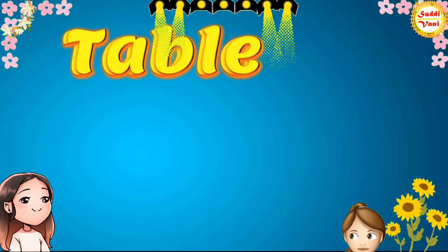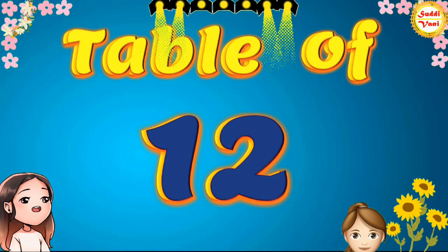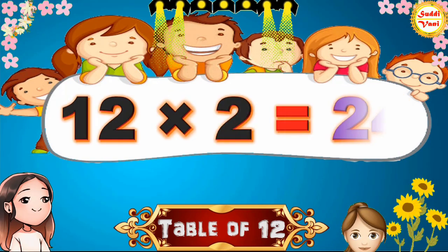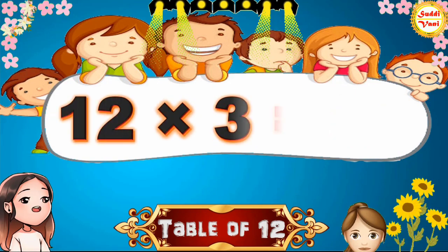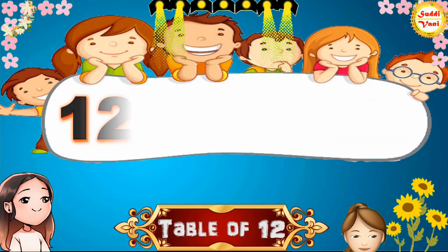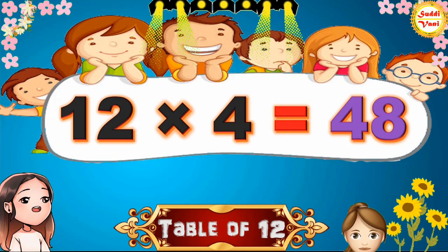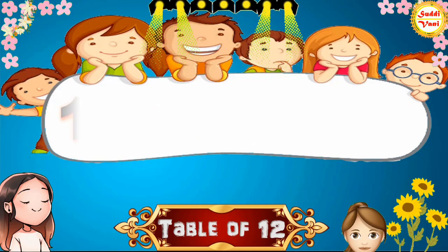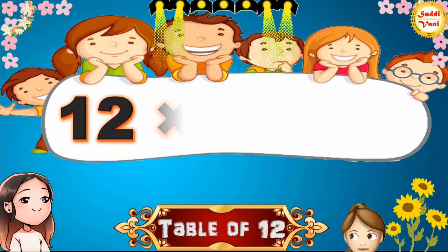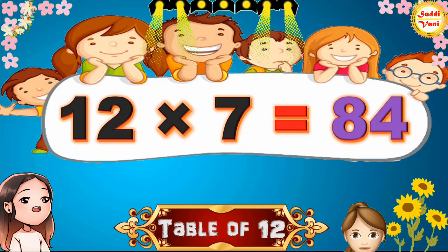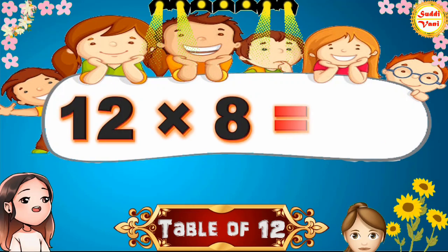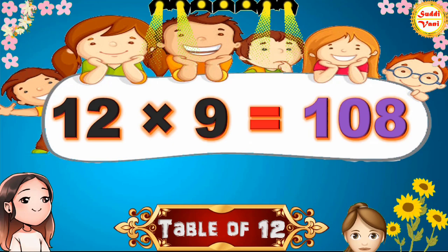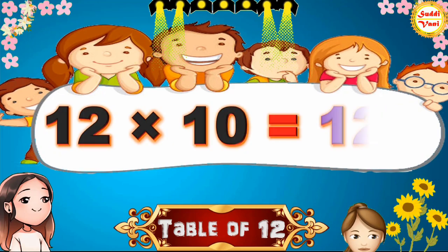Hello children, we will learn table of 12. 12×1=12, 12×2=24, 12×3=36, 12×4=48, 12×5=60, 12×6=72, 12×7=84, 12×8=96, 12×9=108, 12×10=120.